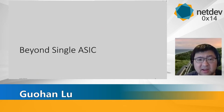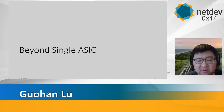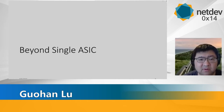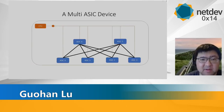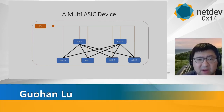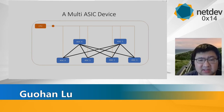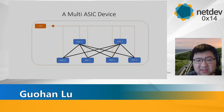That is how single ASIC works on top of SONiC. Next, we'll talk about how we extend this architecture beyond the single ASIC. Here is a typical multi-ASIC switch device. In this device, there is still a single CPU, but within that device there are six ASICs.